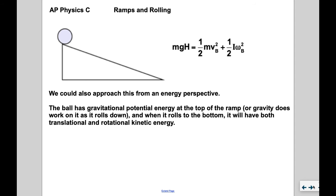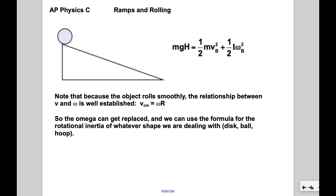We realize that the linear and angular velocities are related through V equals omega times R. We can replace omega squared with V squared over R squared, and we can replace I with the appropriate formula from the table. This is going to be a uniform and homogeneous shape, whether it's a disc, ball, hoop, or whatever.